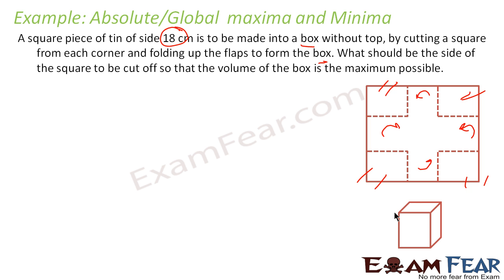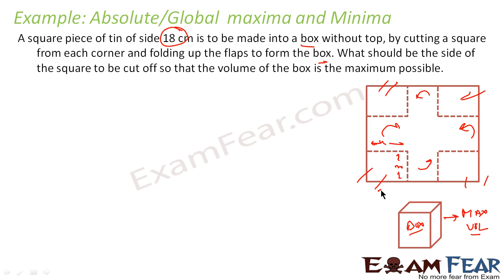So this is what you get — a cuboid or cube-like shape, which is the box. I have to find the value of x, the side of the square that is cut, such that this box has maximum volume. We are cutting squares of side x, x, x — all x — from four corners, and folding them up to get one box with maximum volume. So we have to find the side of the square to be cut.